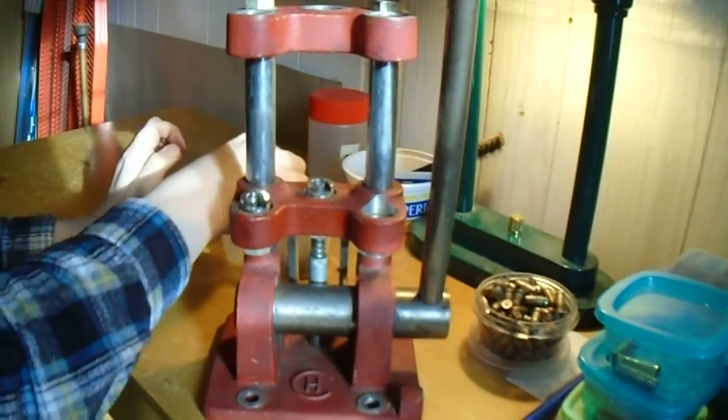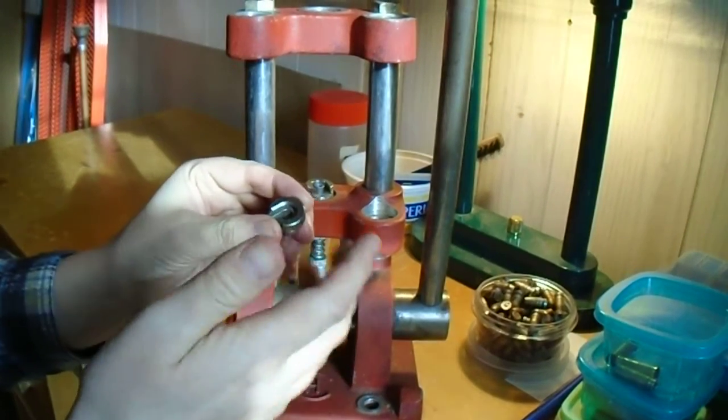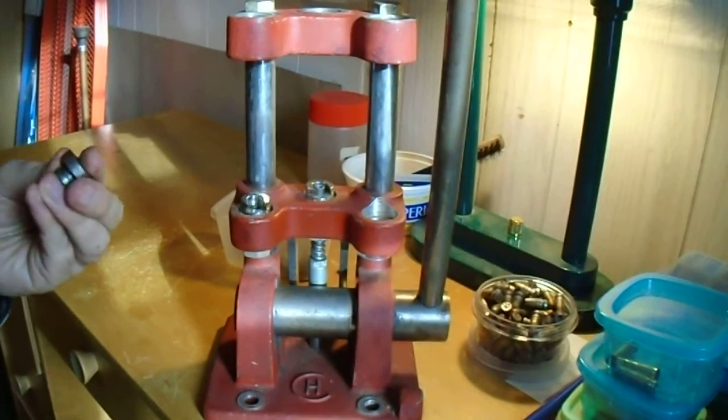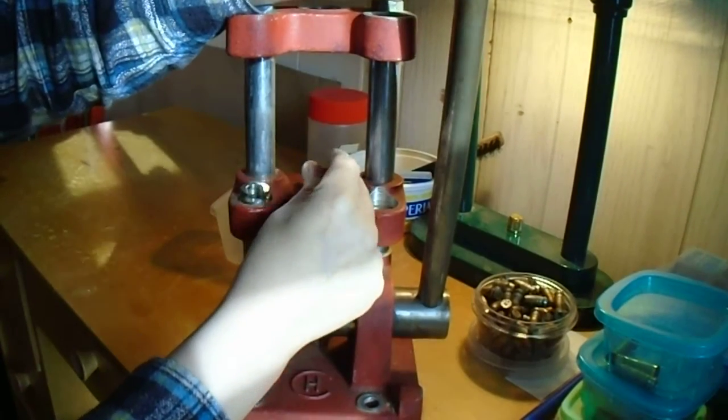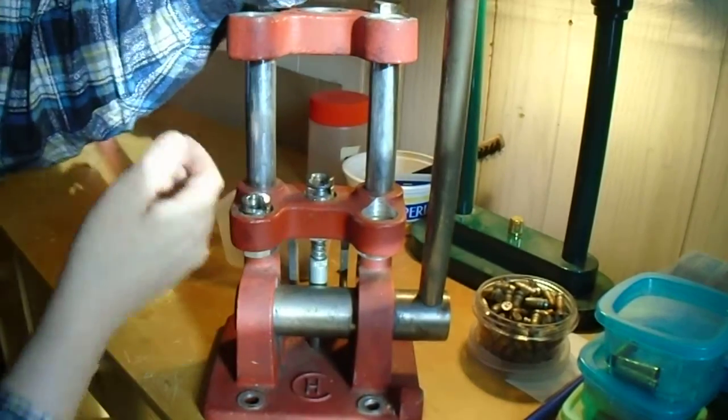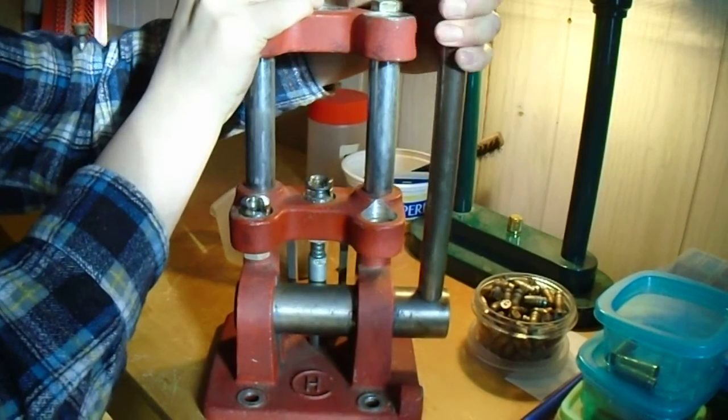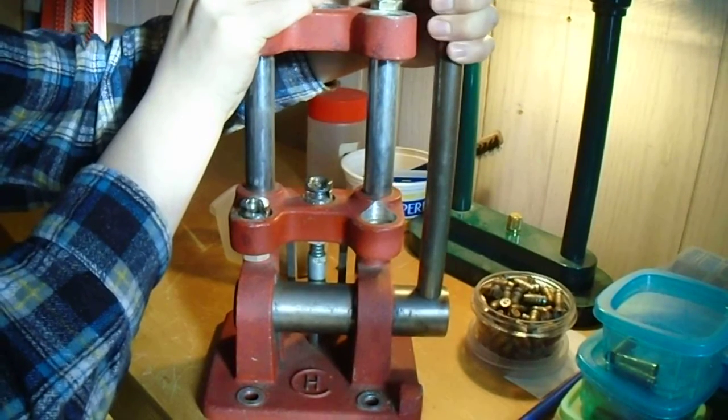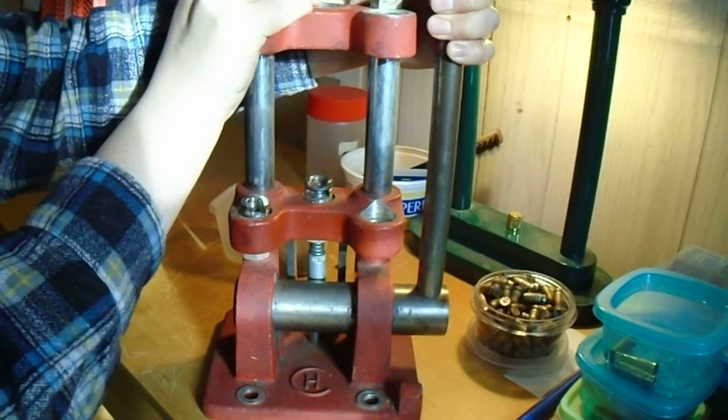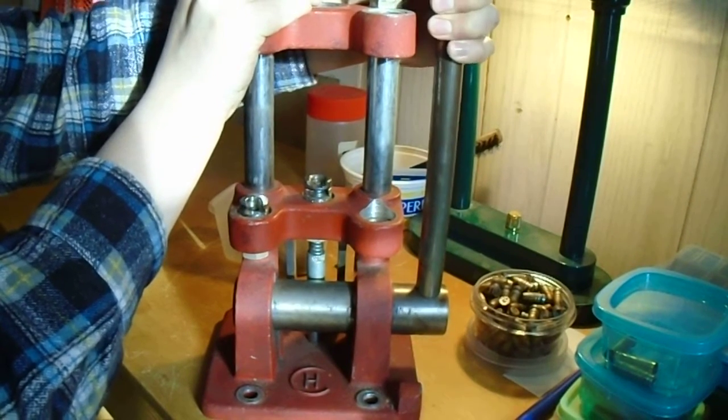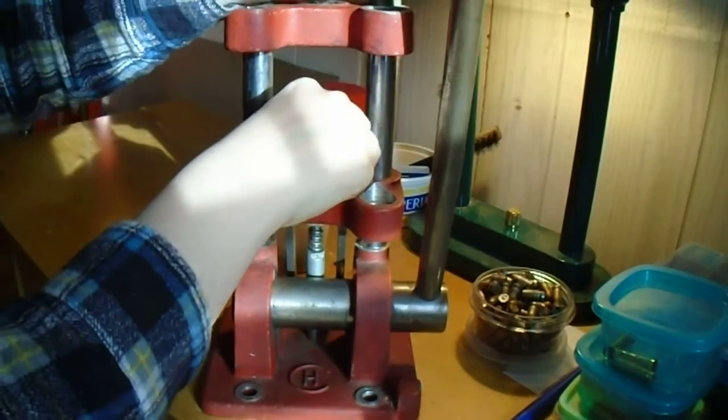So that's fine and dandy. But then if you go to a normal or newer shell holder. This is an RCBS number three. Put that in. And then it won't, let's try to do this so you can see. It won't let the priming thing come up far enough. It sort of almost works, but it's not quite, it won't seat the primer below flush.